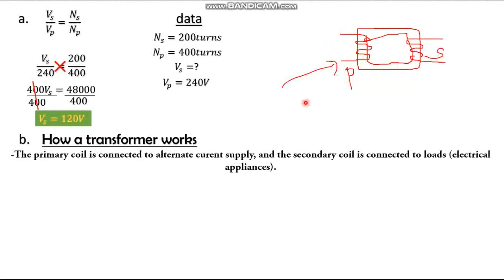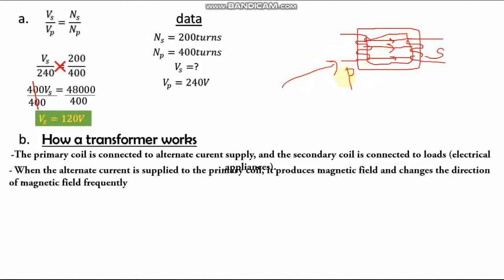The second point: when AC is supplied to the primary coil, a magnetic field is produced. Because alternating current changes direction frequently, this causes the magnetic field produced inside the core to also change direction — because there is a change in the magnetic flux.